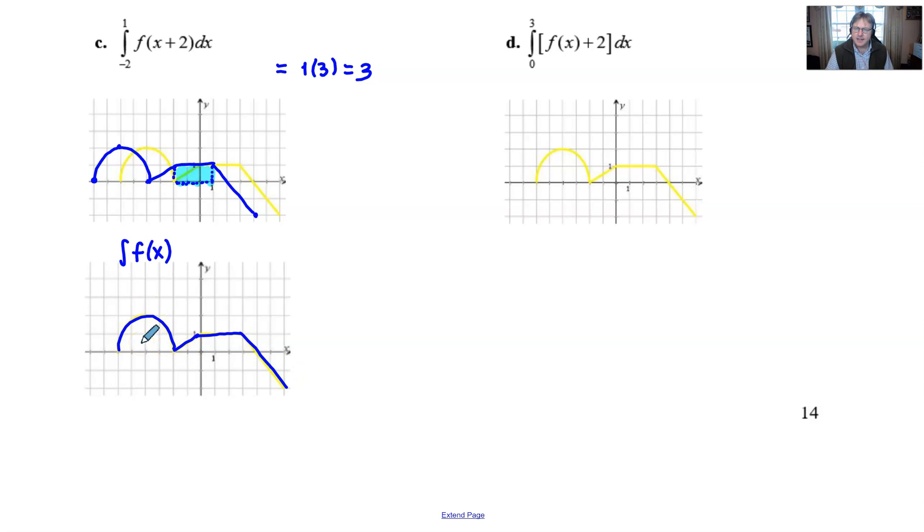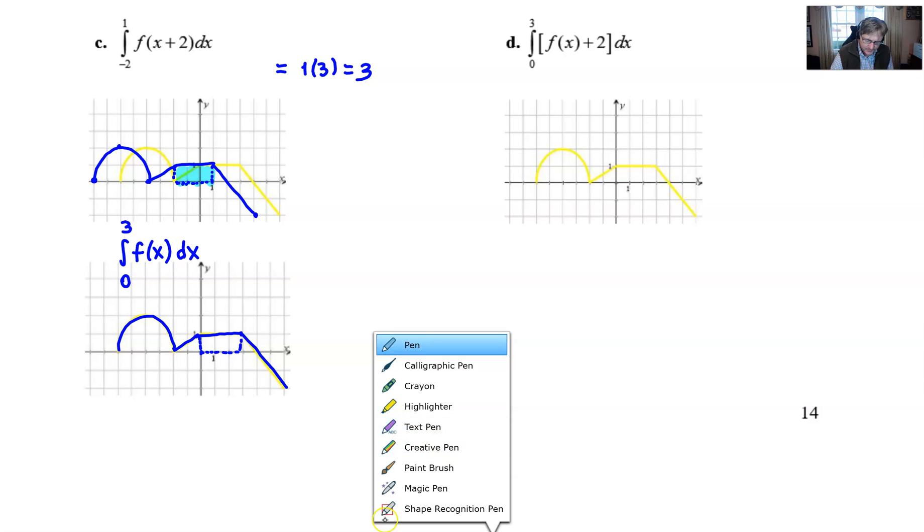If we don't want to shift the graph to the left, we could instead shift the boundaries to the right: 0 and 3. Notice how each of these get 2 added to them. What is nice about this is that the graph didn't have to change. You can take your 0 to 3, your new boundaries, and you quickly notice it's the same exact shape - it's this 3 by 1 rectangle all along.